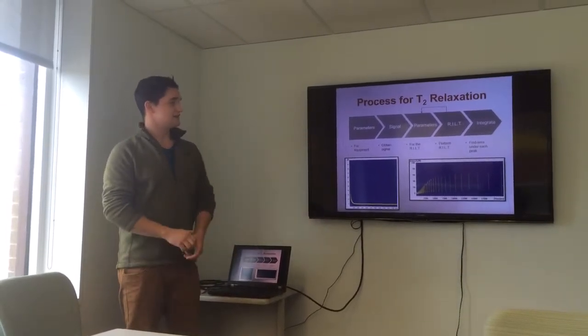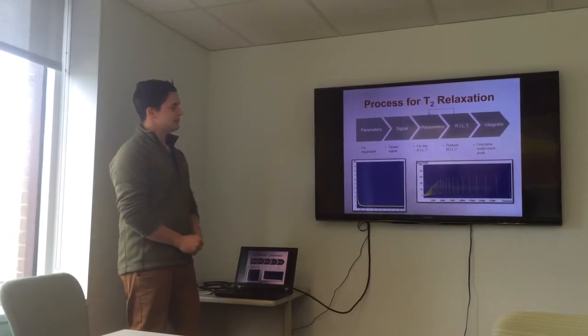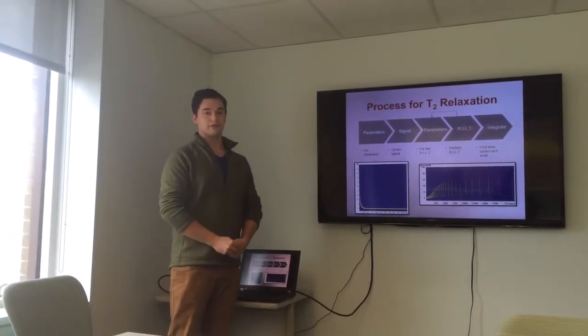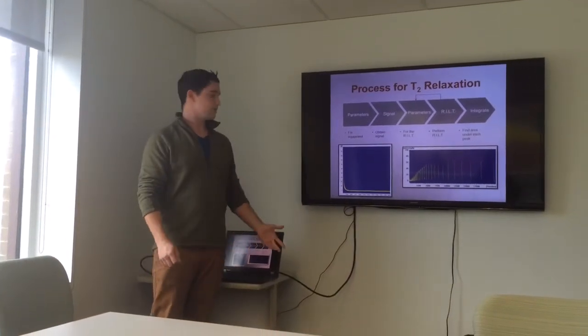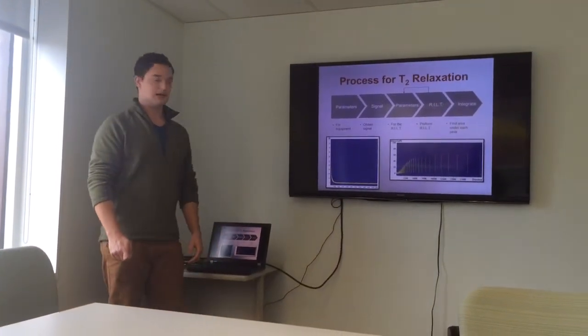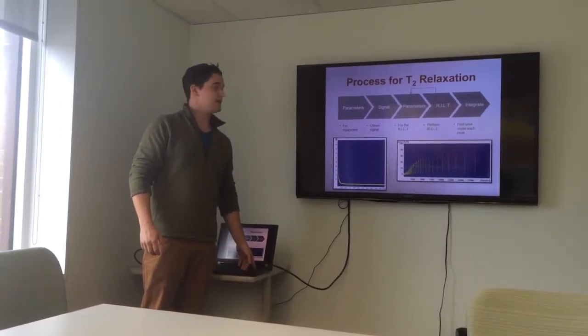So the process of obtaining a signal is quite long and complicated with time domain NMR. And the signal itself produces little to no information when you look at it. So there's examples of signals, and they look like that for almost all the samples. By eye, you can't really notice any sort of difference or obtain much information. So a lot of that happens through mathematics.